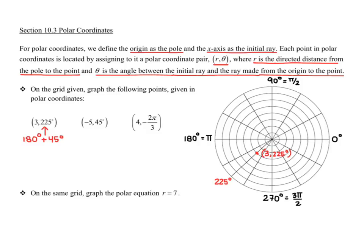The second point is (-5, 45°). Anytime you have a negative r, it reverses the direction, just like with vectors. So instead of going out along the 45° angle, I go the opposite direction, which is the same as (5, 225°).